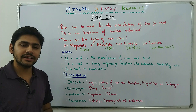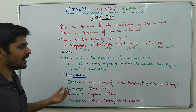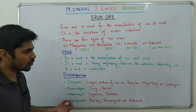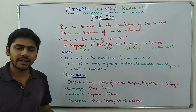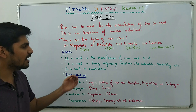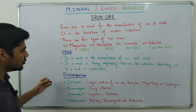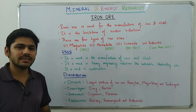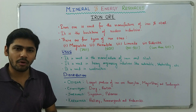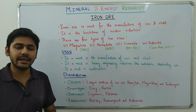The uses of iron ore: first, it is used in the manufacture of iron and steel. Second, it is used in heavy engineering industries like automobile and shipbuilding. Locomotives and ships are built with iron and steel. Third, it is used in construction — iron rods are very important for the stability of structures.